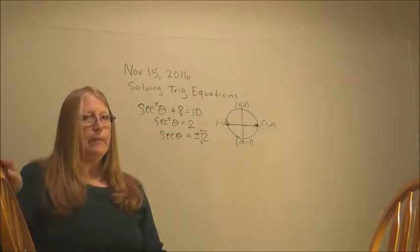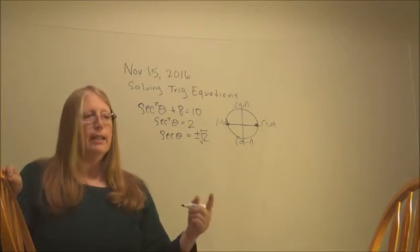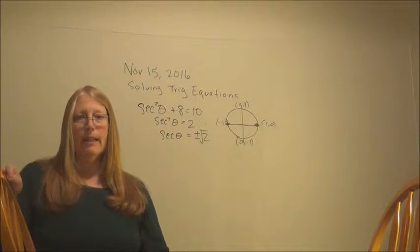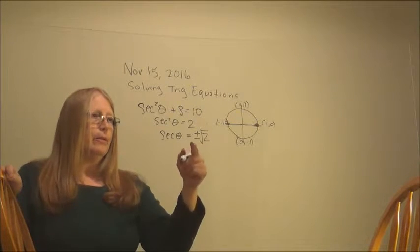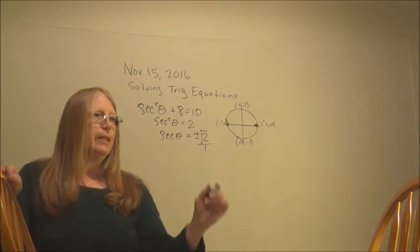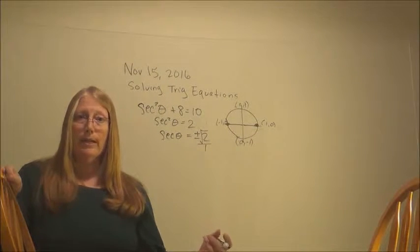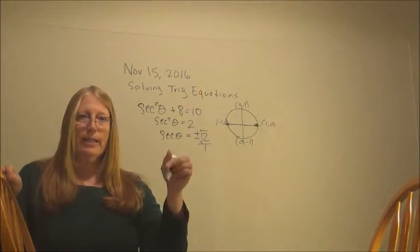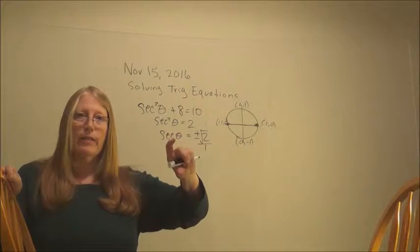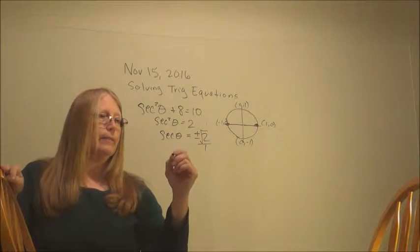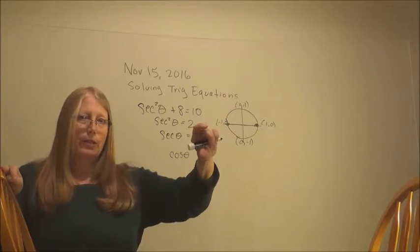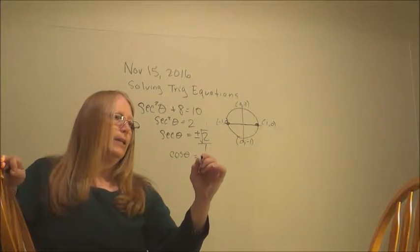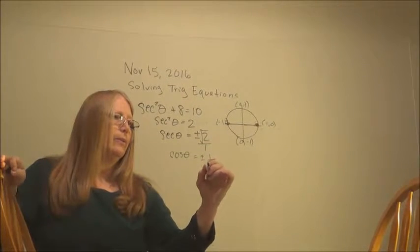Which recreates the plus or minus square root of 2. Now, the complication on this one is that I end up with secant. And I prefer to work in sine, cosine, and tangent. So I'm going to remember this means plus or minus square root of 2 over 1. So I'm going to stand this on its head. What is the reciprocal of secant? It is cosine. So I'm going to turn this on its head. And I get plus or minus 1 over the square root of 2.